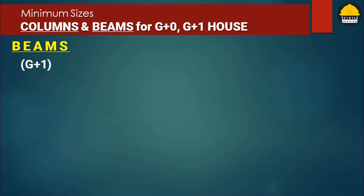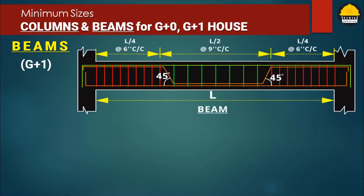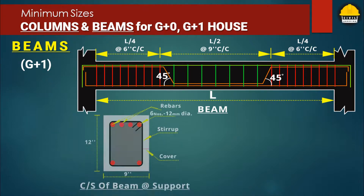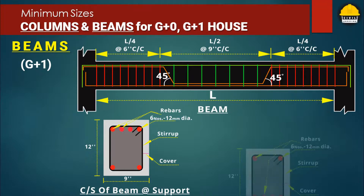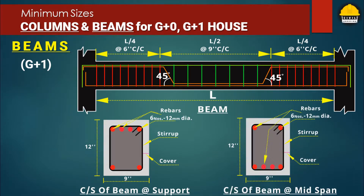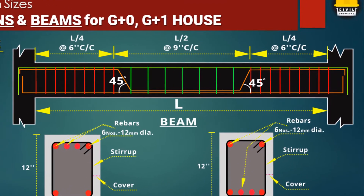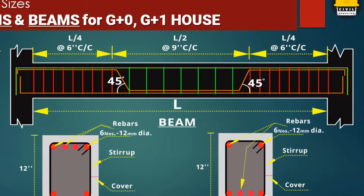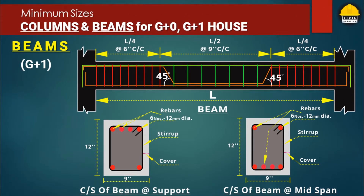Here is the structural diagram for a G+1 building beam reinforcement placement. In this diagram, the bottom horizontal bars shown in orange have a diameter of 12 mm, and the top horizontal bars in green are also 12 mm diameter. At the bottom, two bars are cranked at a 45 degree angle, because shear cracks may appear at both sides of the L/4 distance adjacent to the column, so it is recommended to provide crank bars to counteract the shear force.